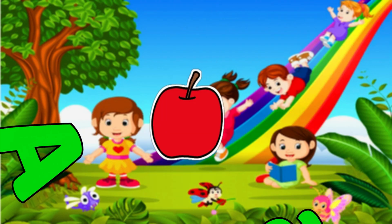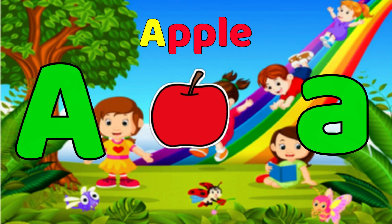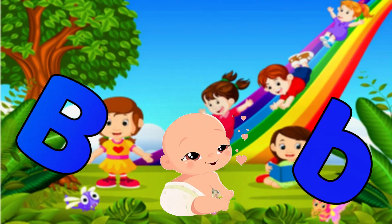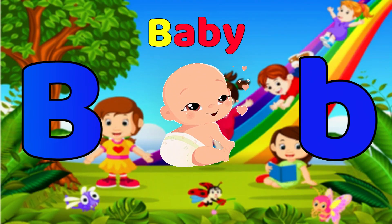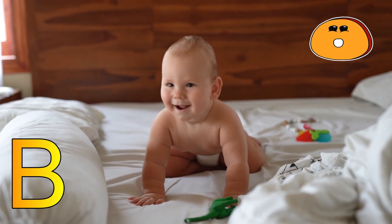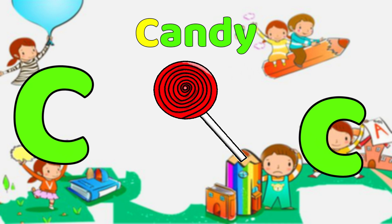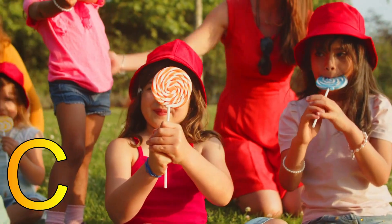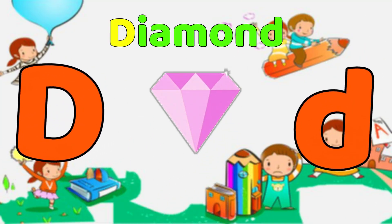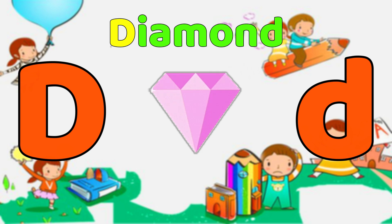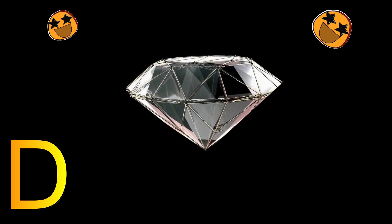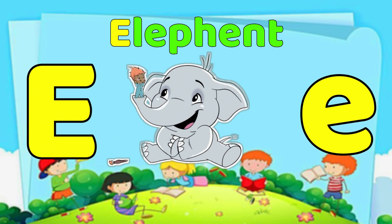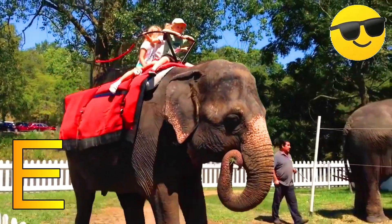A is for Apple. A, Apple, A, Apple. B is for Baby. B, Baby, B, Baby. C is for Candy. C, Candy. D is for Diamond. D, Diamond, D, Diamond. E is for Elephant. E, Elephant, E, Elephant.